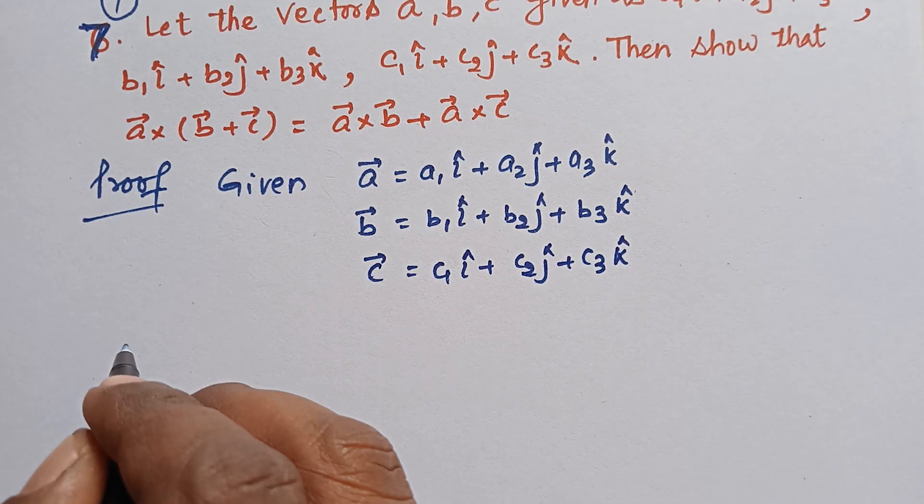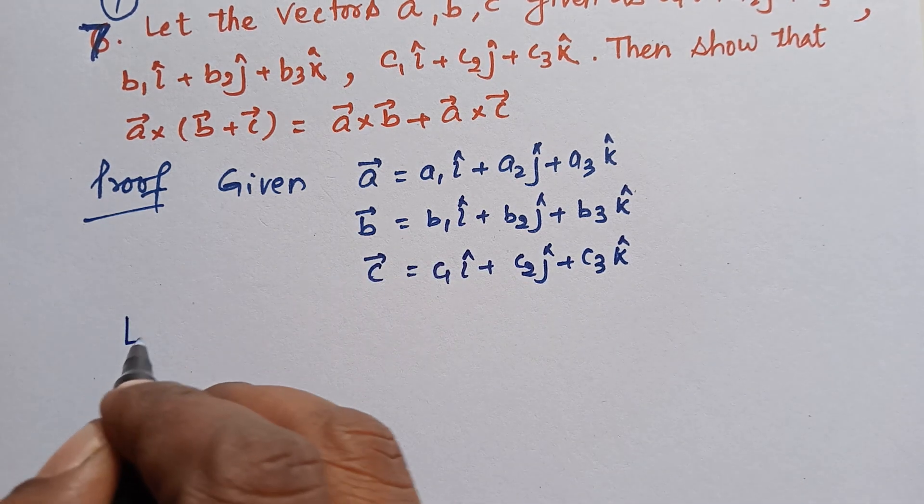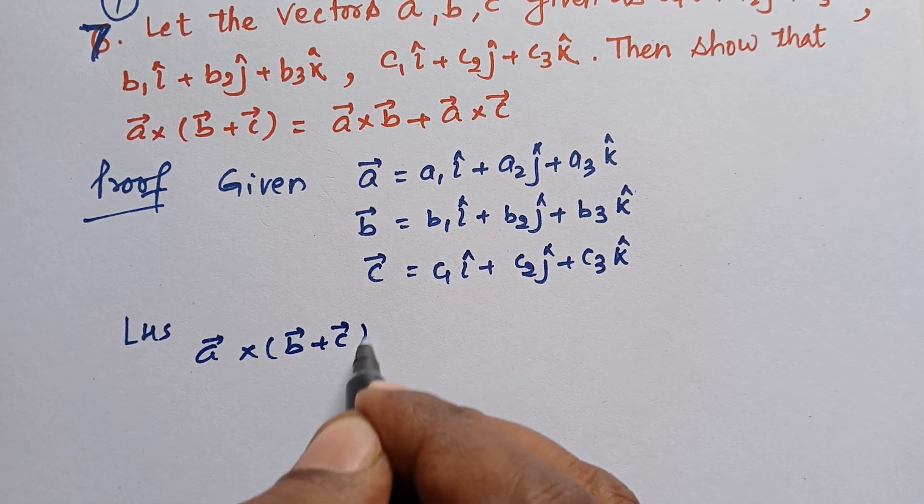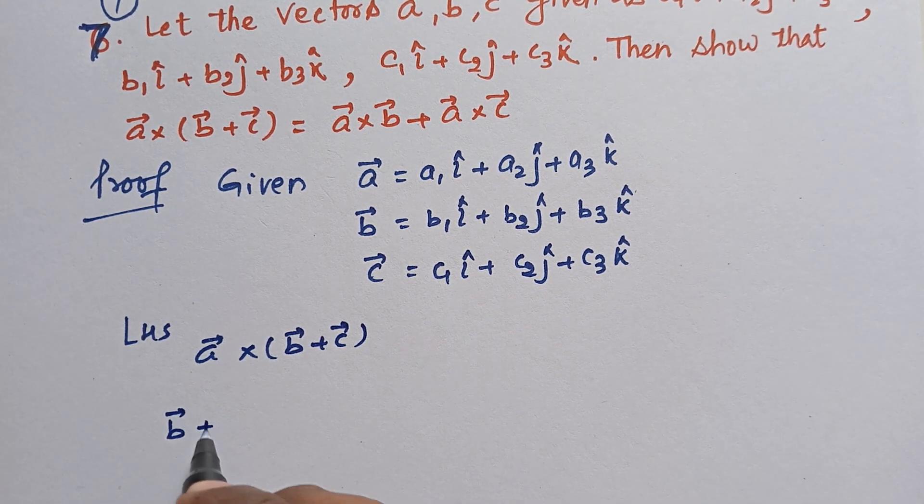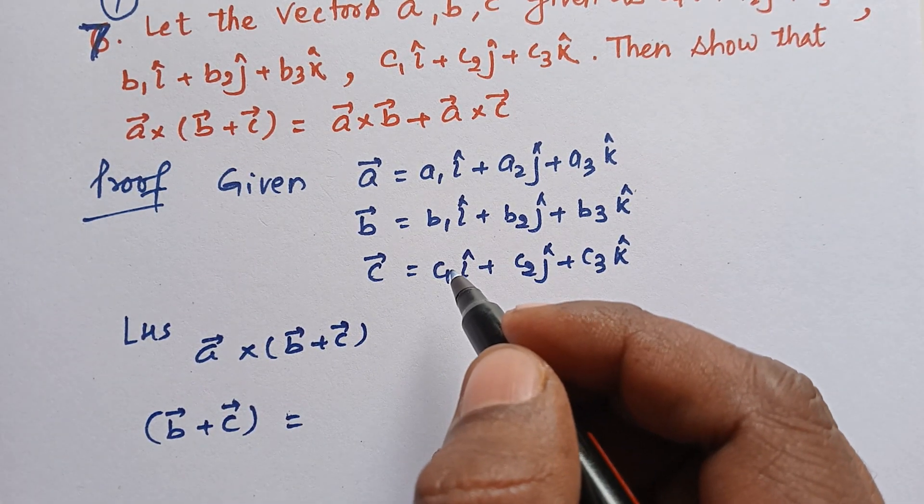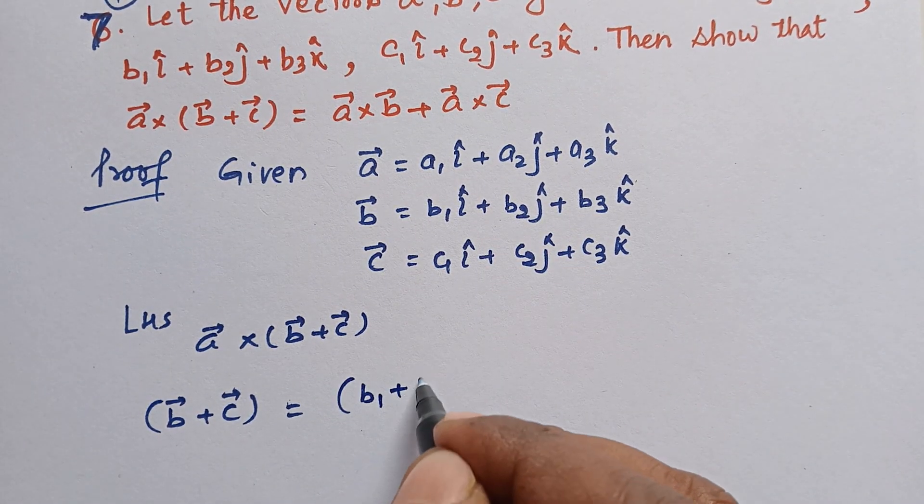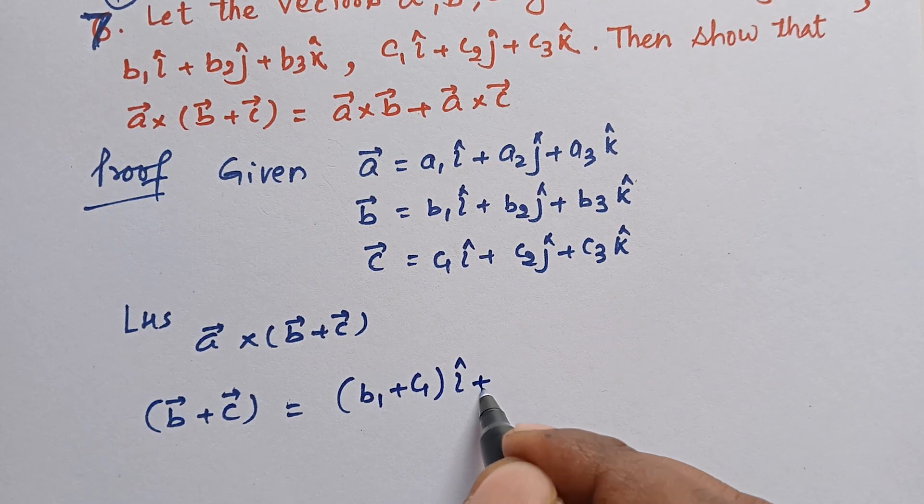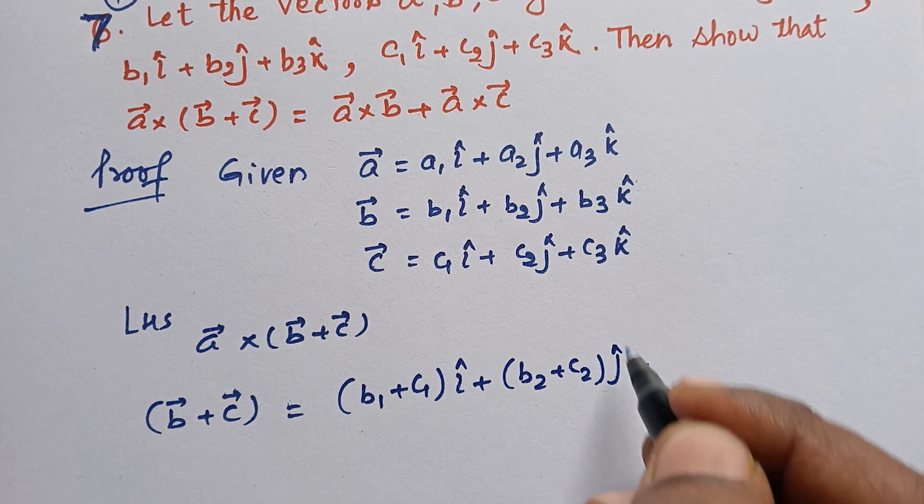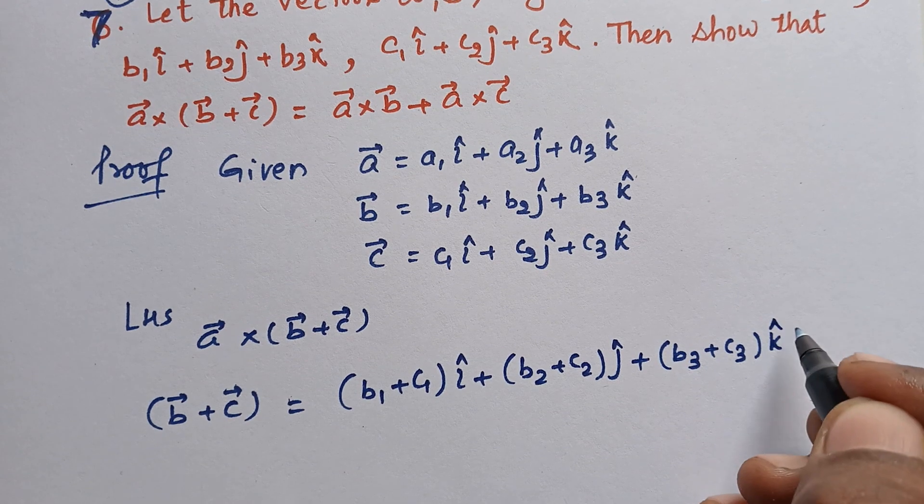Now LHS, what do we need to show in LHS? Let's take LHS: A×(B+C). So first we will work on the bracket, so B plus C means we add B and C. So î with î, we get (b1 + c1)î, ĵ with ĵ gives (b2 + c2)ĵ, and (b3 + c3)k̂.